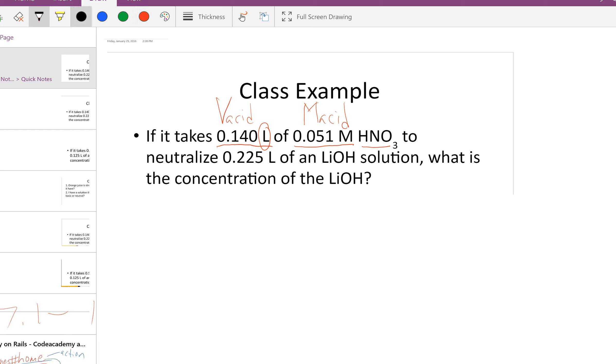It tells me that it neutralizes, which means it hits pH equals 7, or in our case the equivalence point, of 0.225 liters of an LiOH, which is a base solution. What is the concentration of the LiOH?